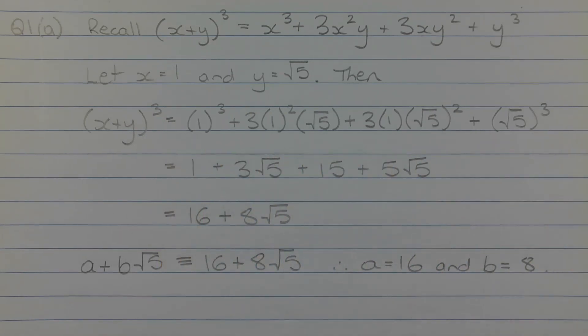Evaluating the right hand side, we get 1 cubed is equal to 1, 3 times 1 squared times the square root of 5 is 3 root 5, 3 times 1 times the square root of 5 squared is equal to 15, and the square root of 5 to the power of 3 is equal to 5 root 5.